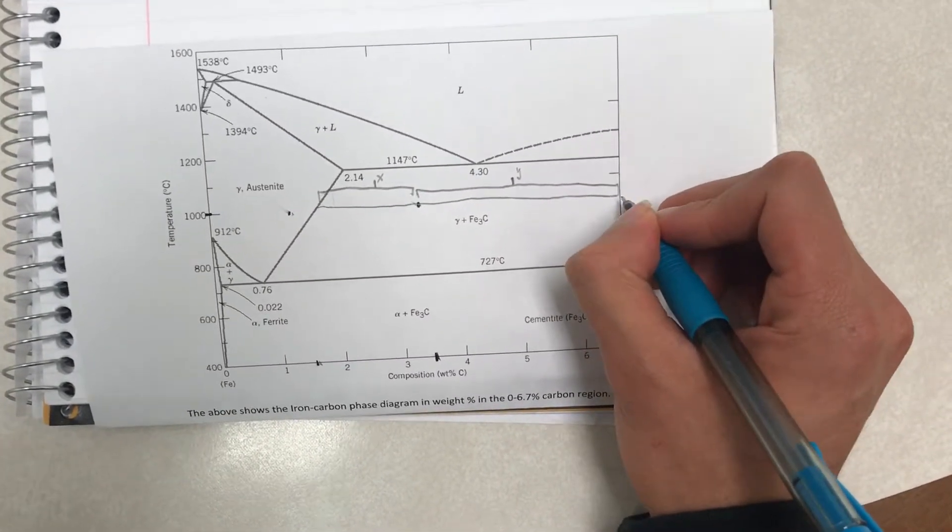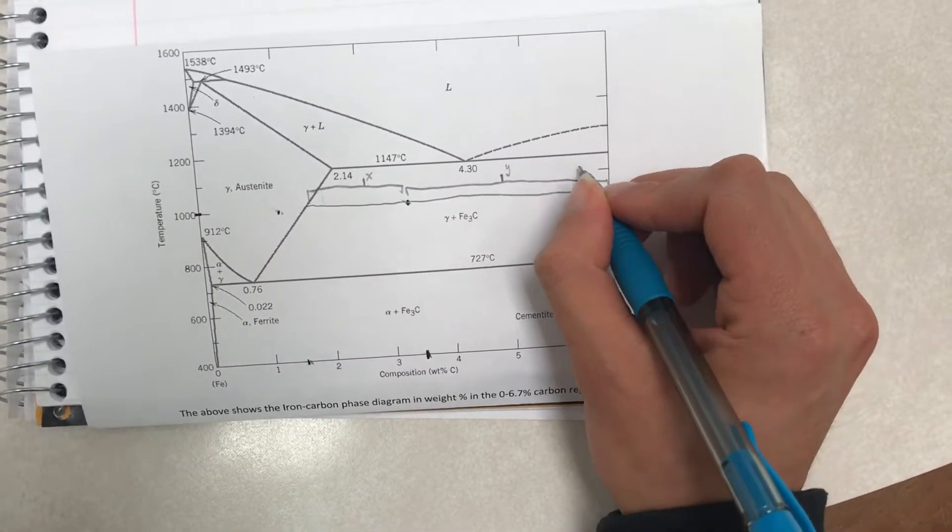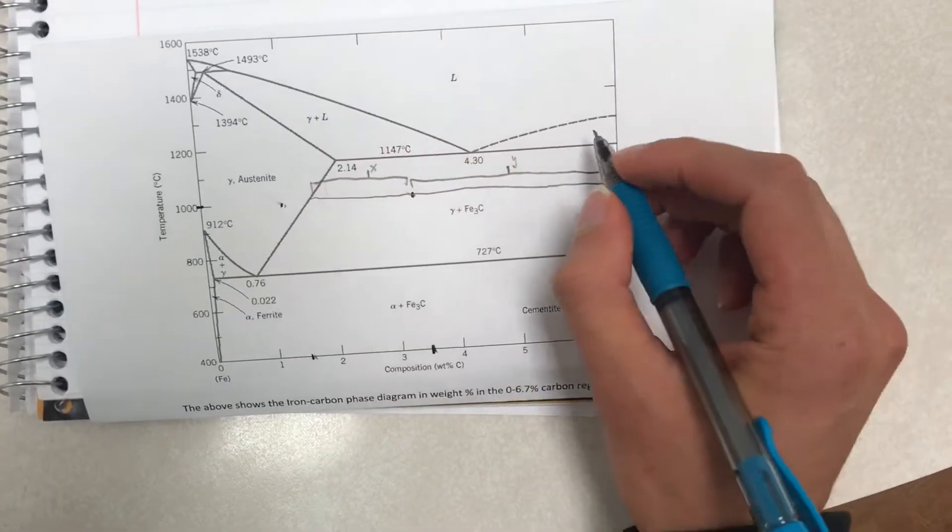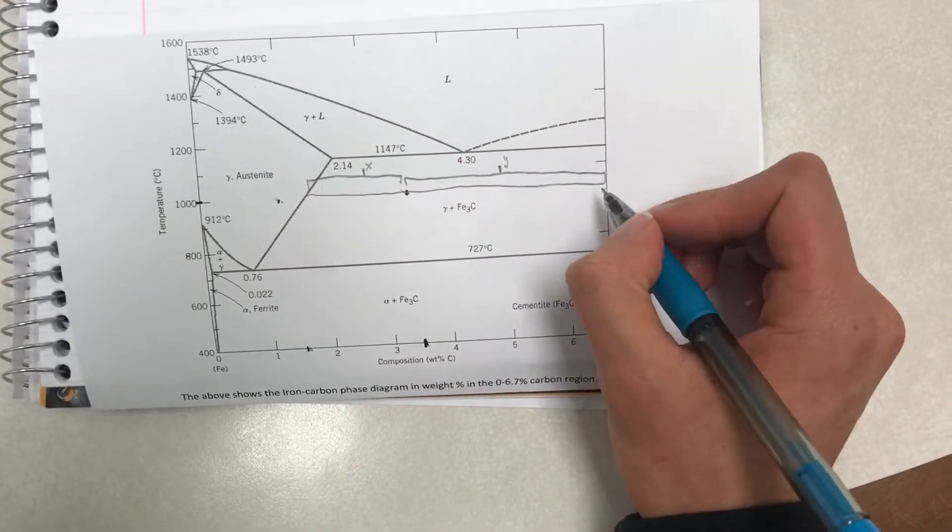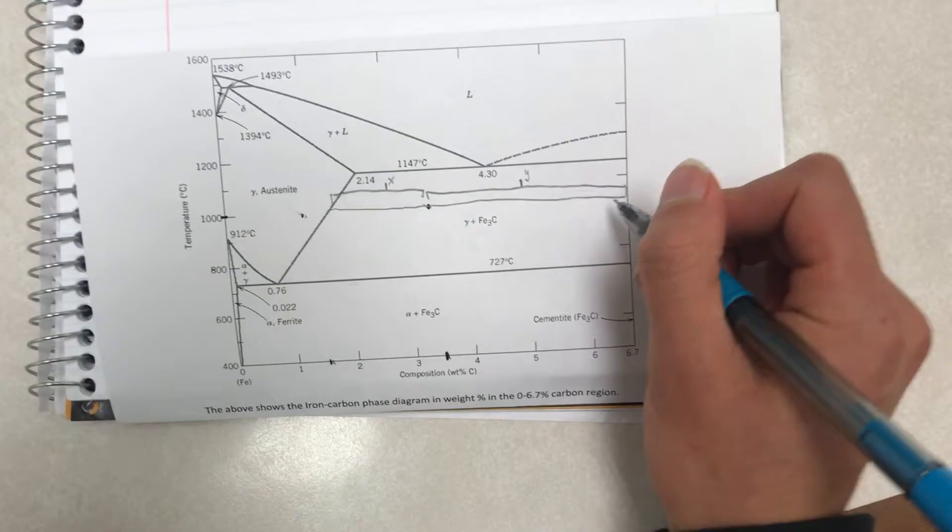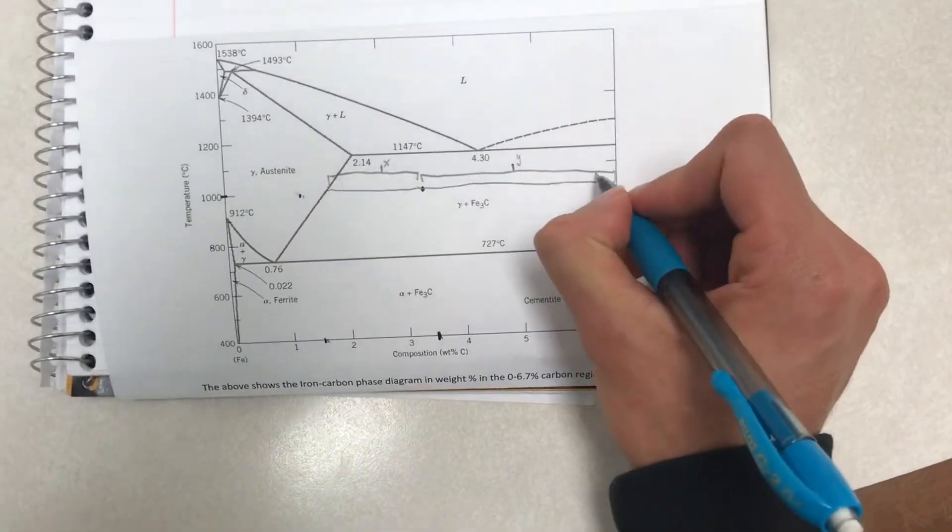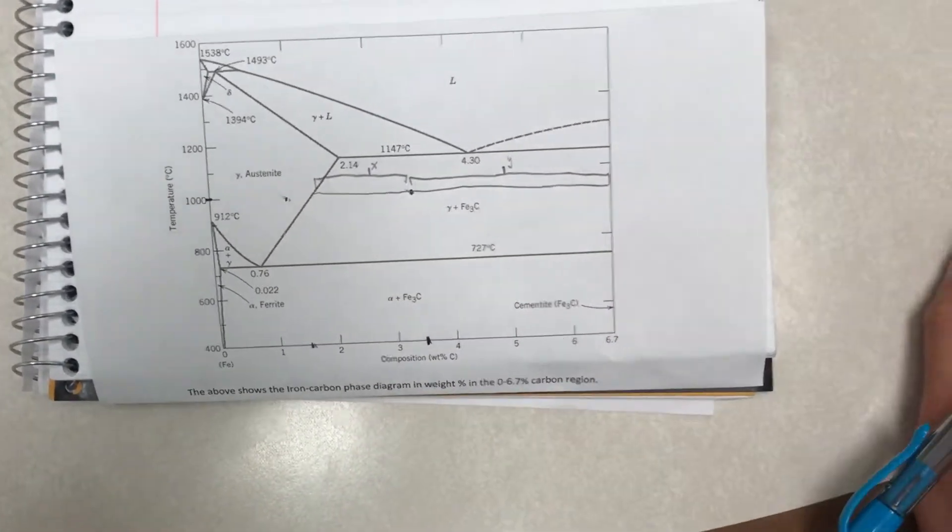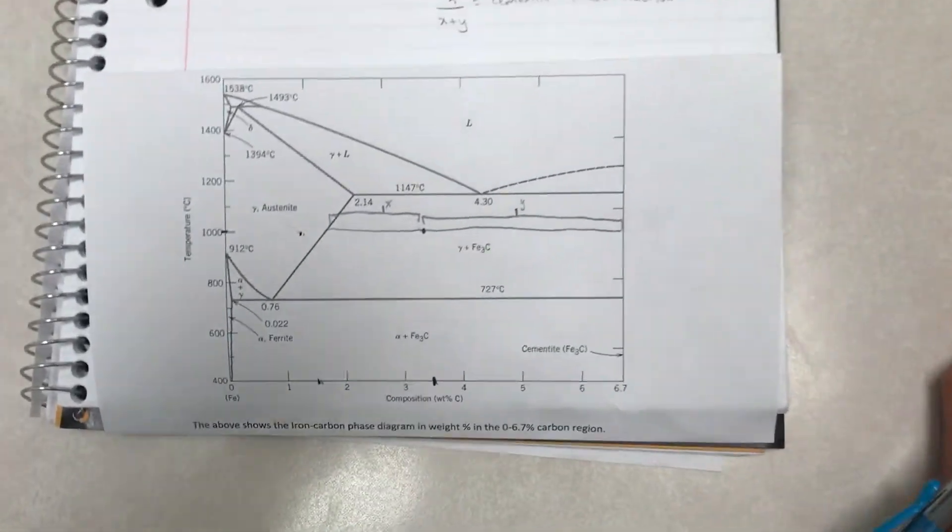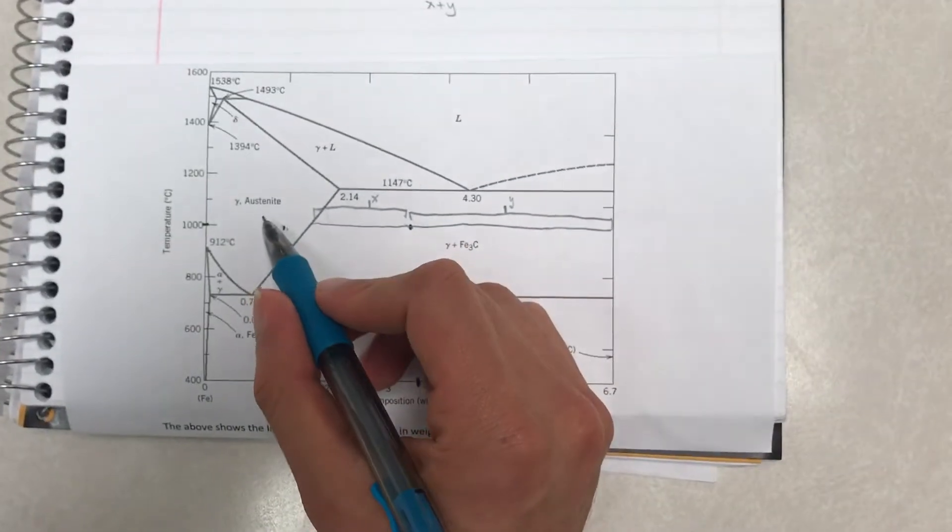Whereas if the point was over here, which is much closer to Cementite, it would be this whole area, which is x over x plus y, which is closer to 1. So the phase fraction of Cementite would be closer to 100%, and that makes sense because it is right by Cementite.